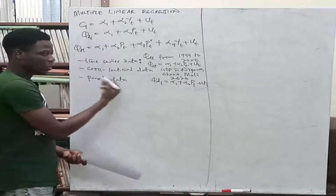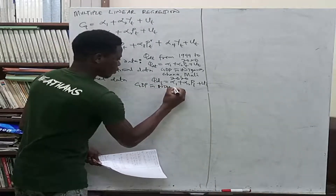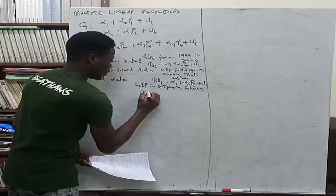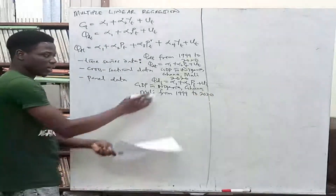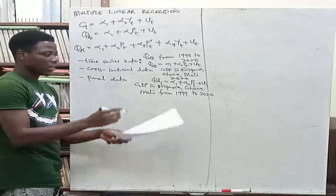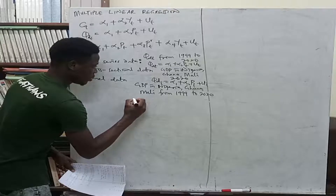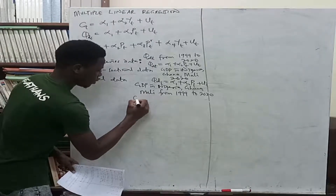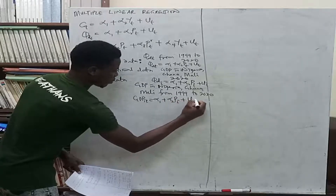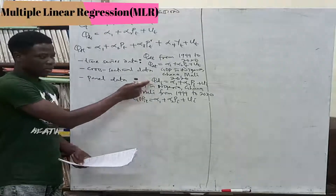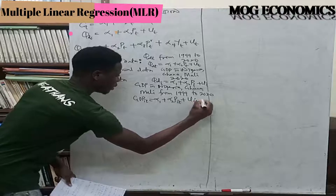Panel data is a combination of the two. For example, GDP in Nigeria, Ghana, and Mali from 1999 to 2020 — you get GDP for each country over the full time period. Panel data comes with the subscript it. For the purpose of this class, we won't be indicating subscripts; we'll work straight through to derive the OLS estimators.